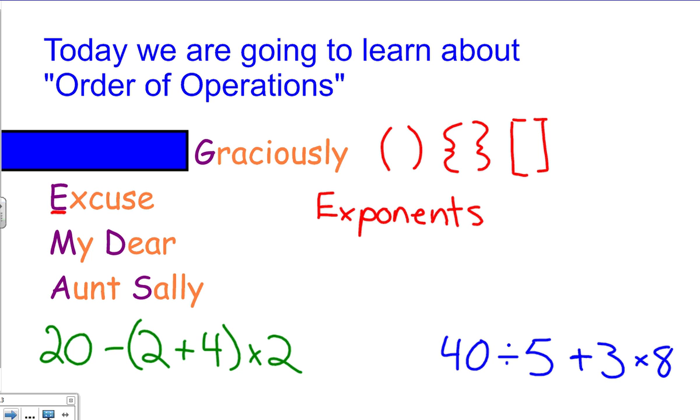An exponent would be like three to the fourth power. Now that's not three times four—that is actually a base number 3 with an exponent 4, which would be 3 × 3 × 3 × 3, which equals 81 for that example.